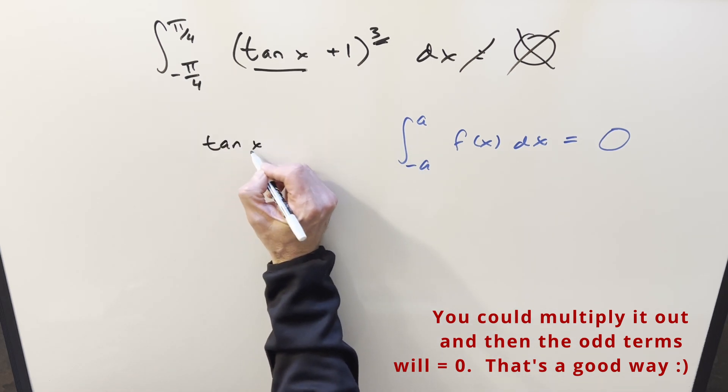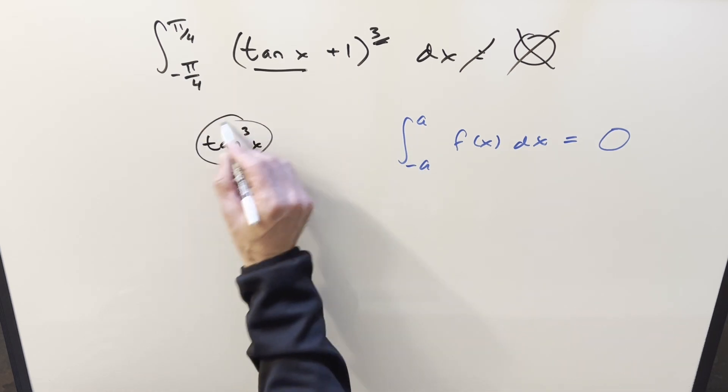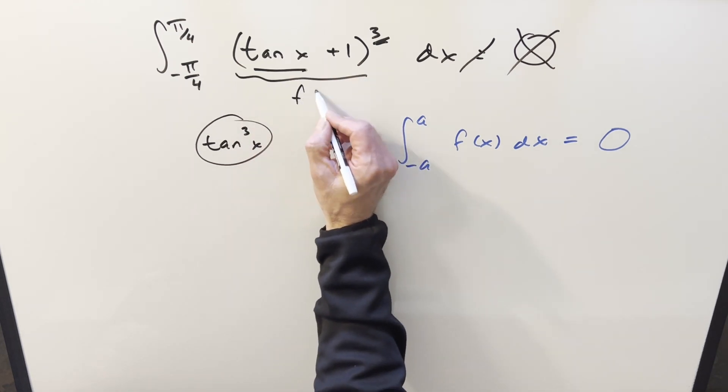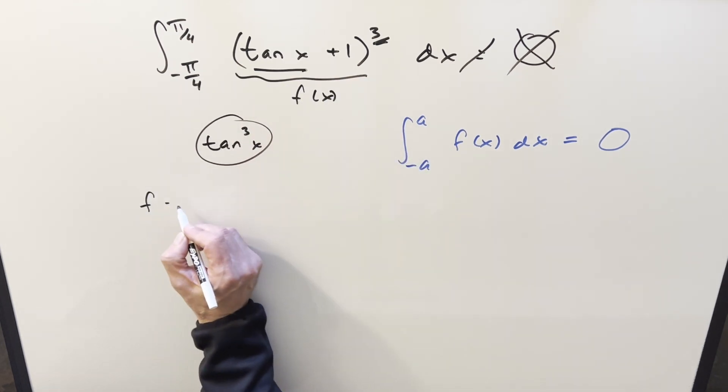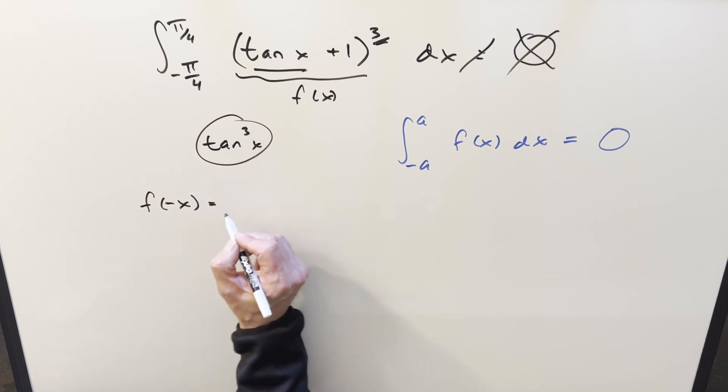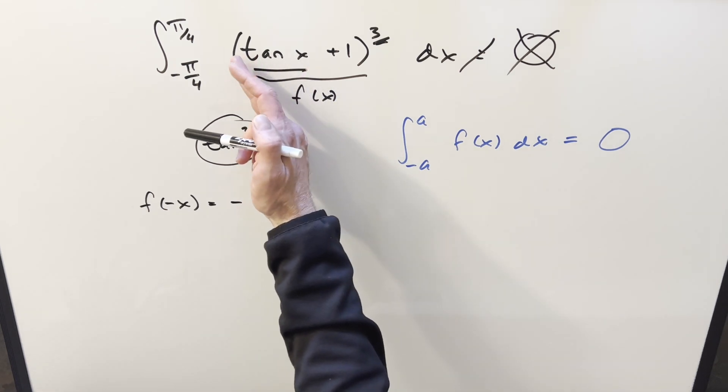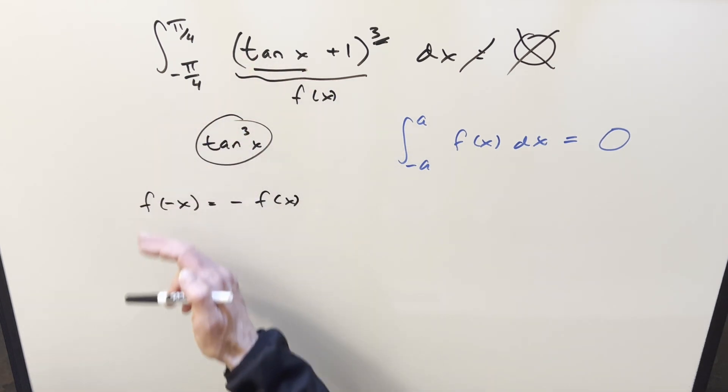I mean tan, if we just had tan x cubed, this is an odd function. The test for an odd function, if this is our f of x, we want if we plug in minus x, we want f of minus x to be equal to minus f of x. And if you do it, it just doesn't quite work. You'll have a minus here. You can bring it out front of the tangent but you can't bring it up front of the whole thing.